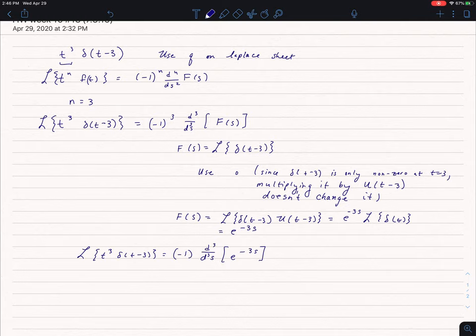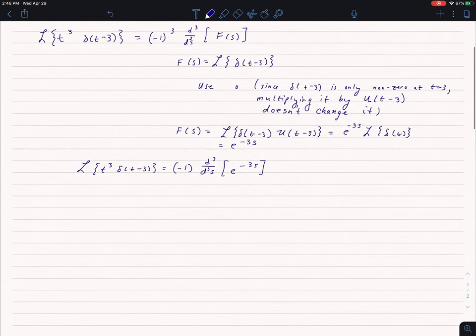I'm going to plug that back into my formula. I take the first derivative, then the second, and finally the third. I end up with the Laplace transform of t to the third power times delta t minus 3 is 27 e to the negative 3s.